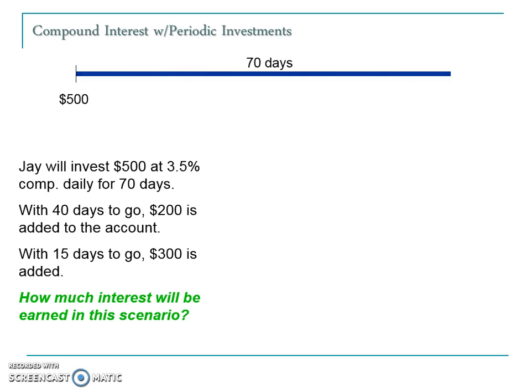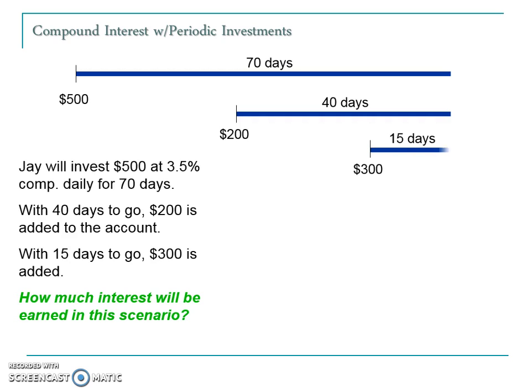Here we have a graphical representation of what's going on. The first deposit of $500 is sitting in the account compounding every day for the 70 days that it's in there. With 40 days to go, we have $200 that now starts to compound, and instead of adding it on to the initial deposit of $500, we're going to treat it as a standalone $200 deposit in an account of its own. We determine the amount of interest it compounds during that time frame. The third phase is the $300 deposit that's going to compound on its own for the 15 days that it's in there.